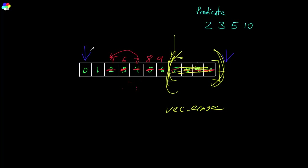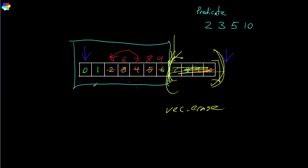Now a nice thing you might have noticed is that the order is preserved before and after the removal — the remaining elements all have the same relative order. This is actually something that in previous videos I think I taught the opposite, because for some reason I had it in my head that the order is not preserved.